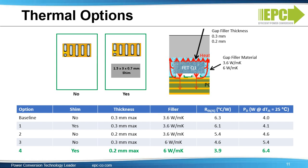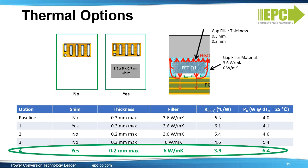Here's a table showing the impact of each of those variables. First, the baseline case: no shim, worst-case thickness, worst-performing filler, gives a thermal resistance of 6.3 degrees C per watt. That allows you to dissipate 4 watts if your maximum temperature rise is limited to 25 degrees C. In the best-case scenario — number 4 on this list — we've added the shim, reduced the thickness to 0.2 millimeters maximum, and used the improved 6 watt per meter Kelvin filler. This gives a thermal resistance of 3.9 degrees C per watt, which allows you to dissipate 6.4 watts in this tiny device before seeing a junction rise of just 25 degrees C.